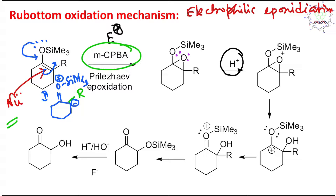We know oxygen is a hard base. What will happen is these lone pairs will be given to the proton and the epoxide oxygen will be protonated — giving a protonated epoxide. Now, the formal positive charge is on the oxygen atom, which is electronegative, so this is not stable. There are two possibilities: bond opening to produce a tertiary carbocation, which is significantly stable, or opening of the other bond where the positive charge comes at a secondary position.